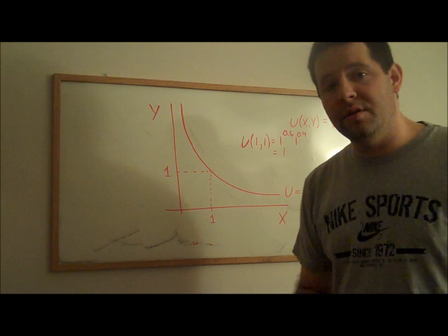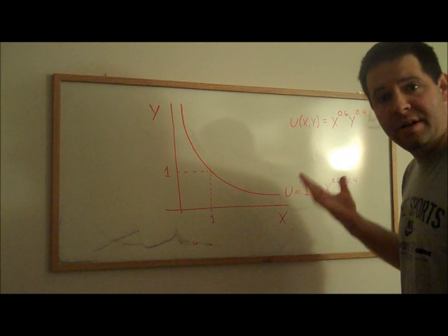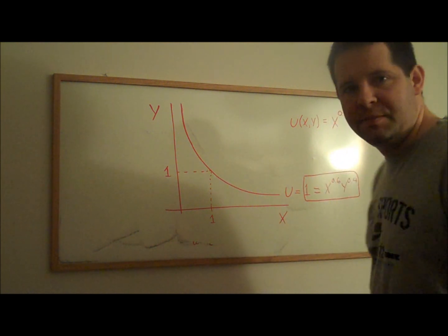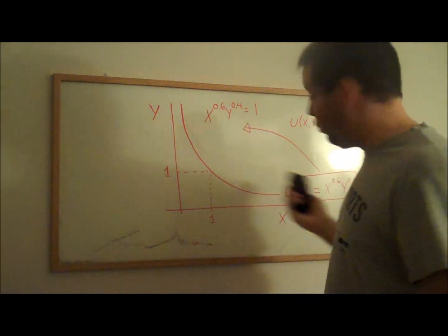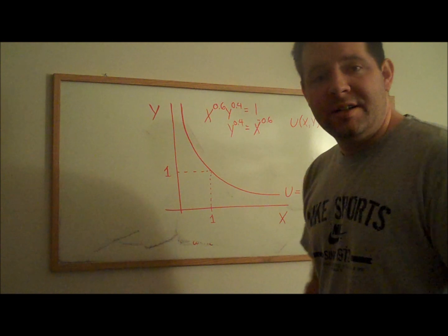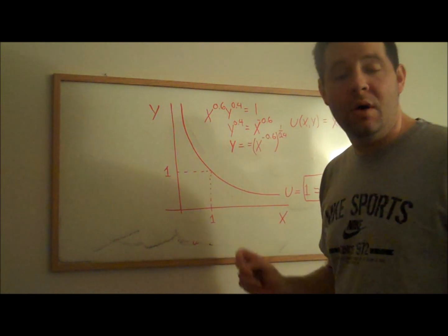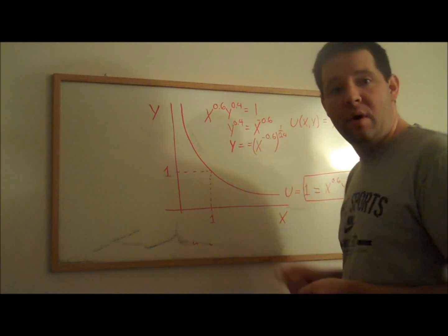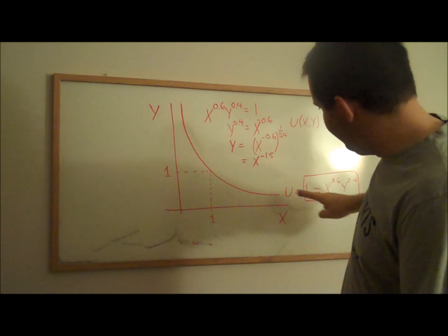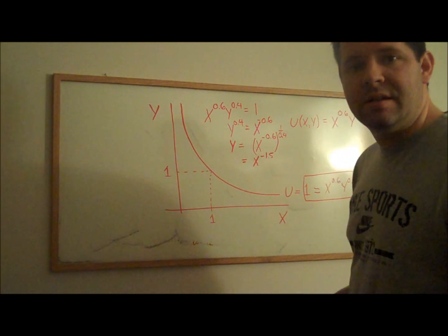We can express all of those points by setting the utility function equal to 1, which describes a relationship between x and y. Let's work with that relationship to get it in terms of y as a function of x. I multiply both sides by x to the negative 0.6, which cancels the x to the 0.6 term. Then taking both sides to the power of 1 over 0.4 gives an exponent of negative 0.6 over 0.4, which equals negative 1.5. So y equals x to the negative 1.5, and that's this exact indifference curve.